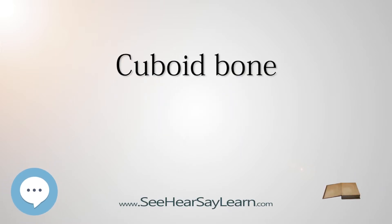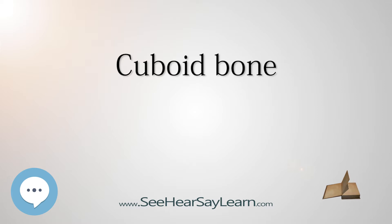In the human body, the cuboid bone is one of the seven tarsal bones of the foot. The cuboid bone is the most lateral of the bones in the distal row of the tarsus. It is roughly cubical in shape and presents a prominence on its inferior or plantar surface: the tuberosity of the cuboid. The bone provides a groove where the tendon of the peroneus longus muscle passes to reach its insertion in the first metatarsal and medial cuneiform bones.